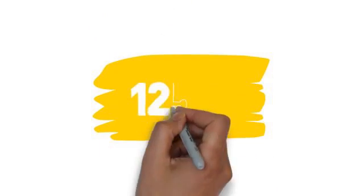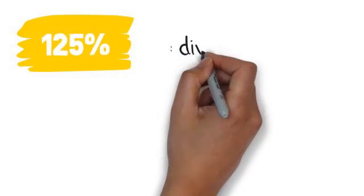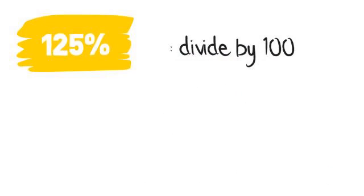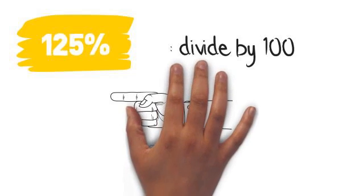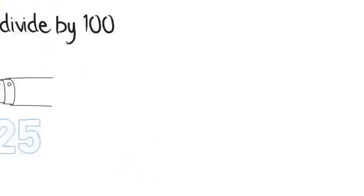A further example using one hundred and twenty-five percent is that you would divide one hundred and twenty-five by one hundred. You would then move the decimal points two places to the back, and that would give you one point two five.